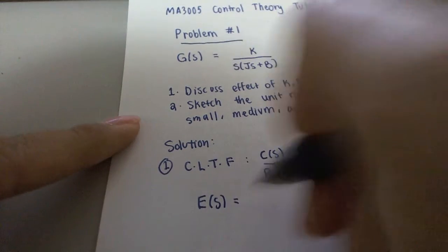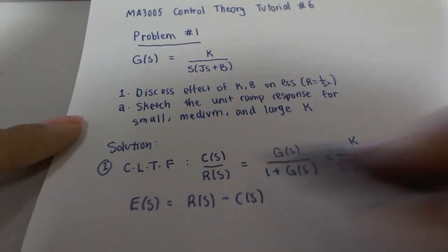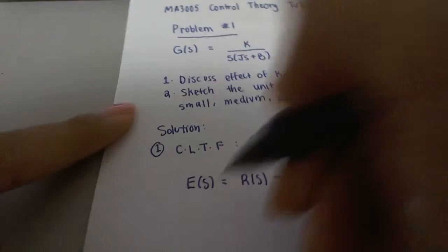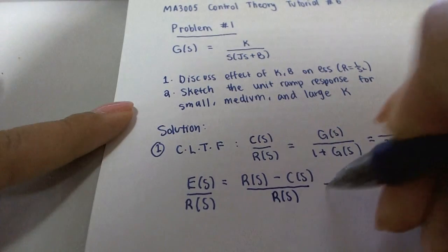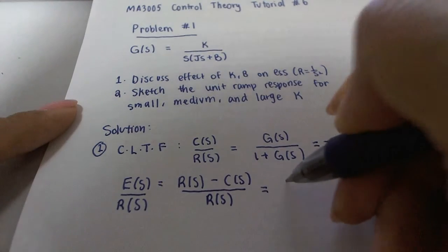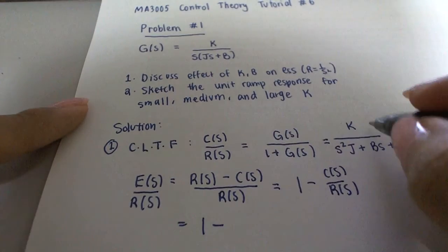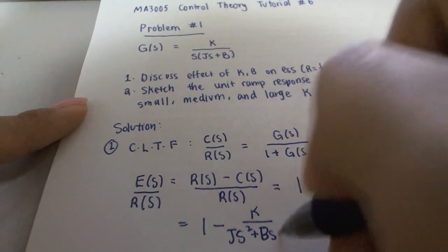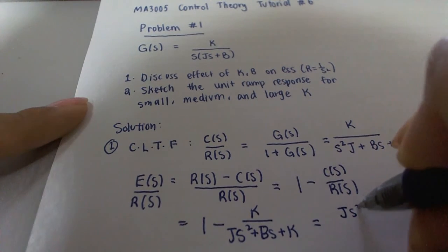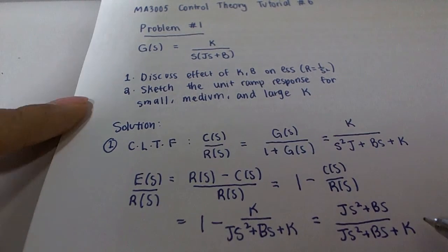The error of the system is given by the input minus the output, so R(s) minus C(s). Since we have the transfer function in terms of C(s)/R(s), we divide both sides by R(s). Simplifying, we get E(s)/R(s) equals 1 minus C(s)/R(s), which gives us (js² + bs) over (js² + bs + k). This is our error transfer function.